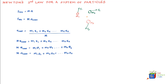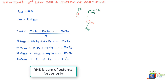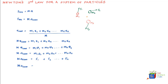We can simplify this equation by writing M times a_cm equals the force acting on mass 1, plus force acting on mass 2, plus force acting on mass 3, and so on up to the nth mass. The right-hand side includes both external and internal forces acting on each particle, but Newton's third law says the internal forces cancel each other. So the right-hand side is simply the vector sum of all external forces, giving us M times a_cm equals F_net — exactly what we started with.